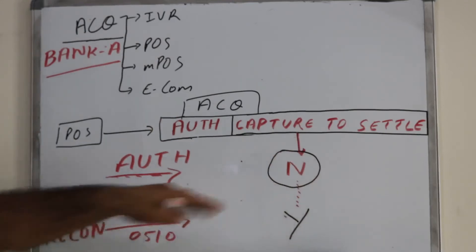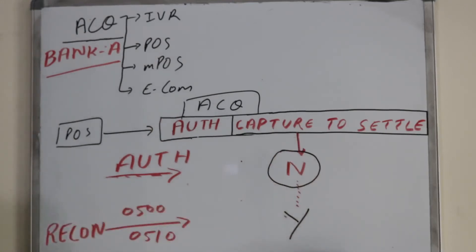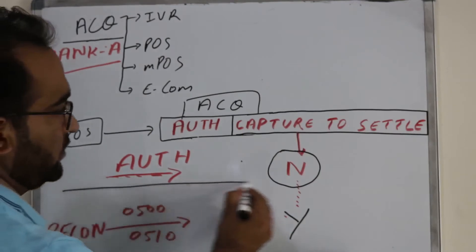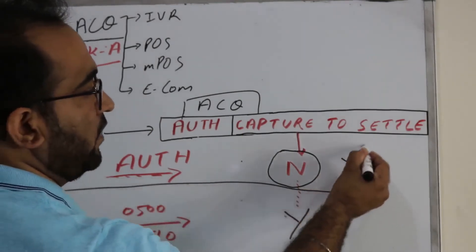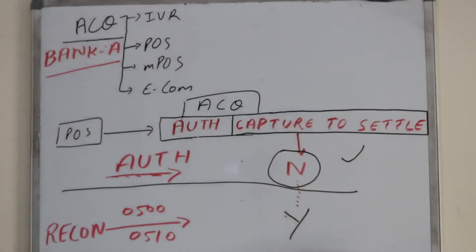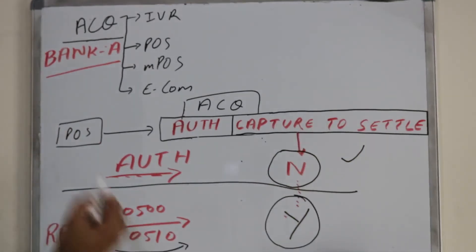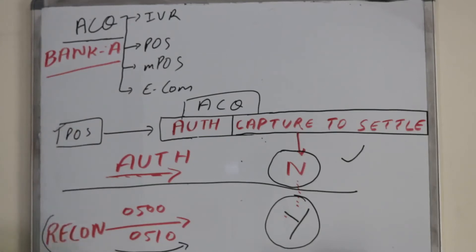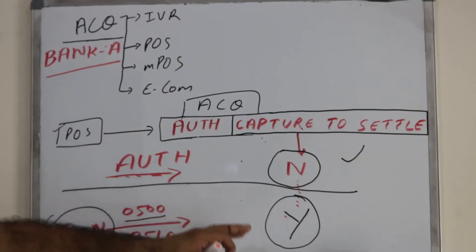In this state, a merchant cannot be settled because there is another lag. At the end of day, the merchant will submit the batch — the reconciliation, which is a 500 message — and the acquiring bank will reconcile the batch.